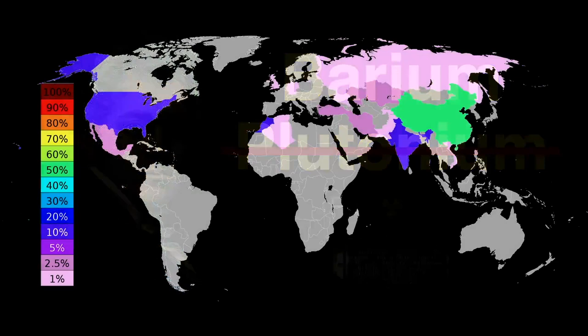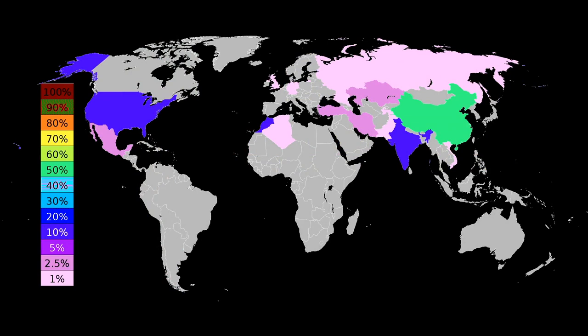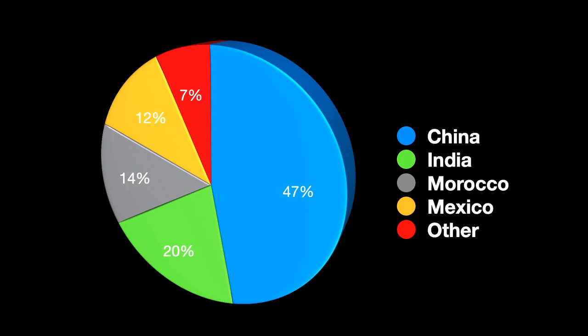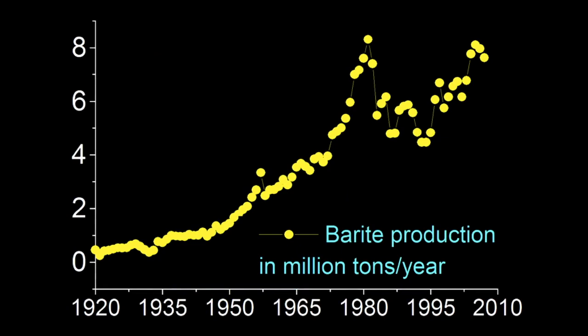Since most of the world's barium is consumed as barite, production numbers are usually about that mineral, not the element. China is the major world producer of barite, followed by India, Morocco, Mexico, and others. According to the U.S. Geological Survey, China produces almost 50 percent of the barite in the world, followed by India with 20 percent, Morocco with 14 percent, Mexico with 12 percent, and everyone else with the remaining 7 percent. Barite production has risen almost exponentially from 1920, doubling almost every 30 years.